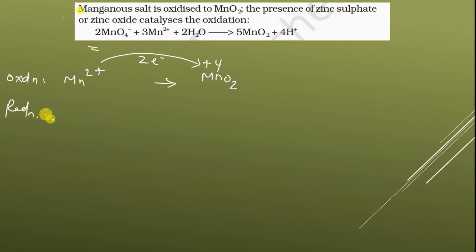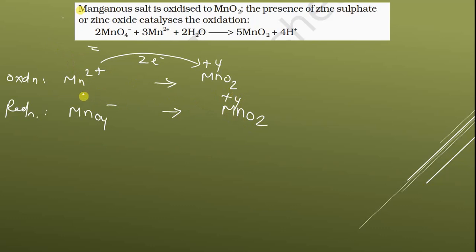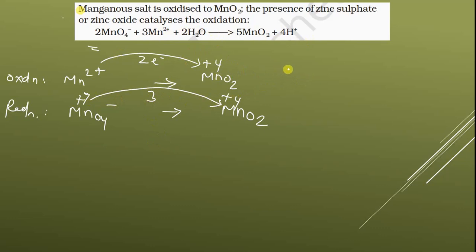For the reduction half reaction, MnO4- gets converted into MnO2. MnO2 is in the plus four oxidation state, and MnO4- is in the plus seven oxidation state. So from plus seven to plus four, three electrons are involved.